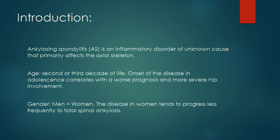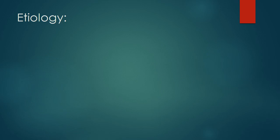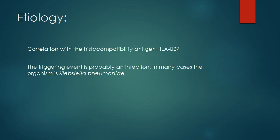Introduction: Ankylosing Spondylitis (AS) is an inflammatory disorder of unknown cause that primarily affects the axial skeleton. The disease usually begins in the second or third decade of life. Onset in adolescence correlates with a worse prognosis and more severe hip involvement. Men are affected approximately three times more than women. The disease in women tends to progress less frequently to total spinal ankylosis. The histocompatibility antigen HLA-B27 is positive in over 90% of patients and 53% of their first-degree relatives. The presence of HLA-B27 predisposes individuals to develop arthritis in response to several environmental factors. The triggering event is probably an infection.